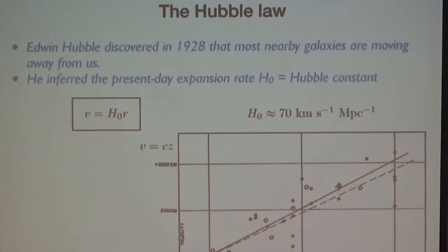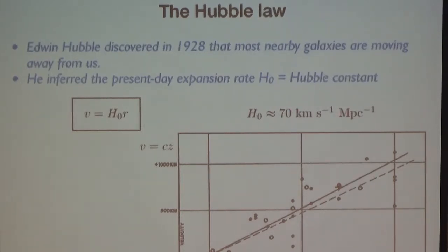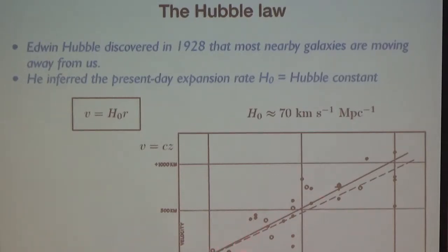What you find is that the current value of the expansion rate — the Hubble constant — is on the order of 70 km/s per megaparsec. This tells you that a galaxy like Andromeda, M31, is moving away from us at a speed of 70 km/s. Each point in that plot is one galaxy in our nearby universe.